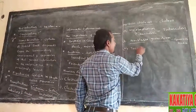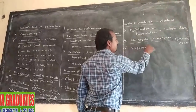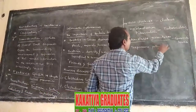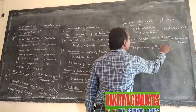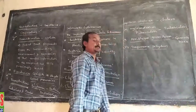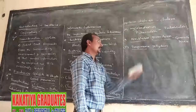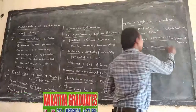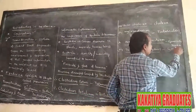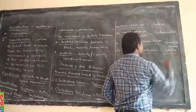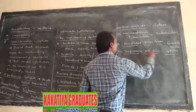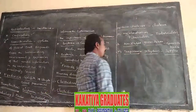Treponema pallidum is a bacteria. It causes syphilis disease. Syphilis disease is caused by the bacterium Treponema pallidum.